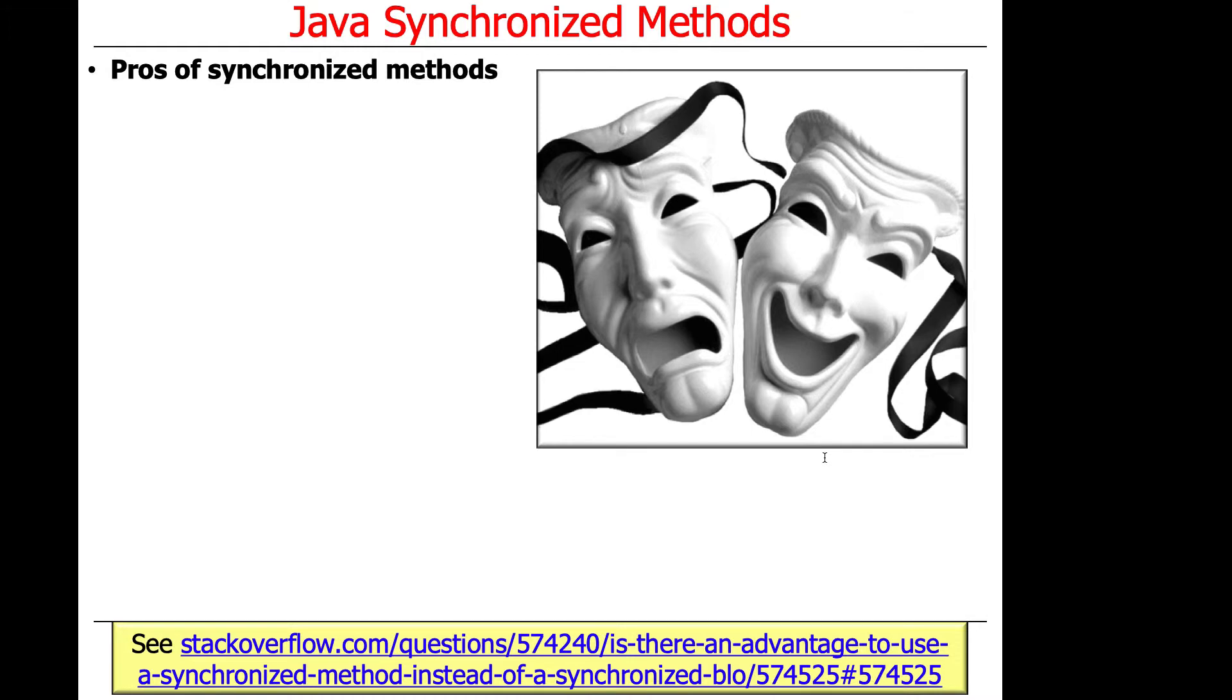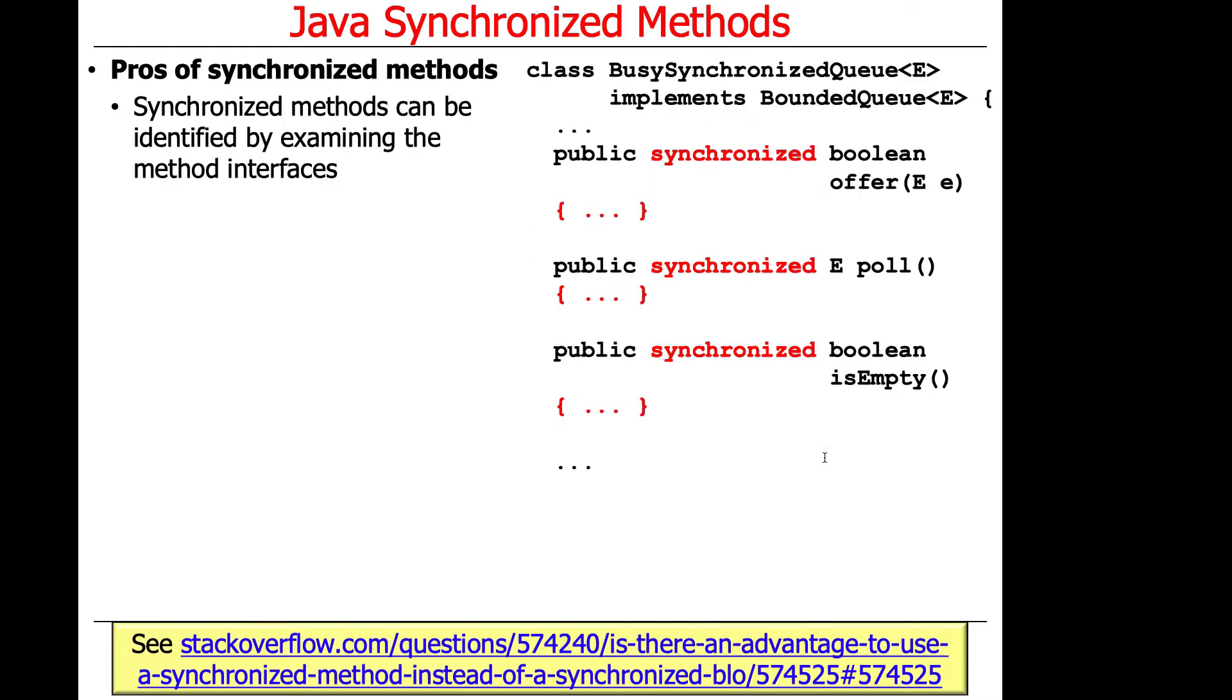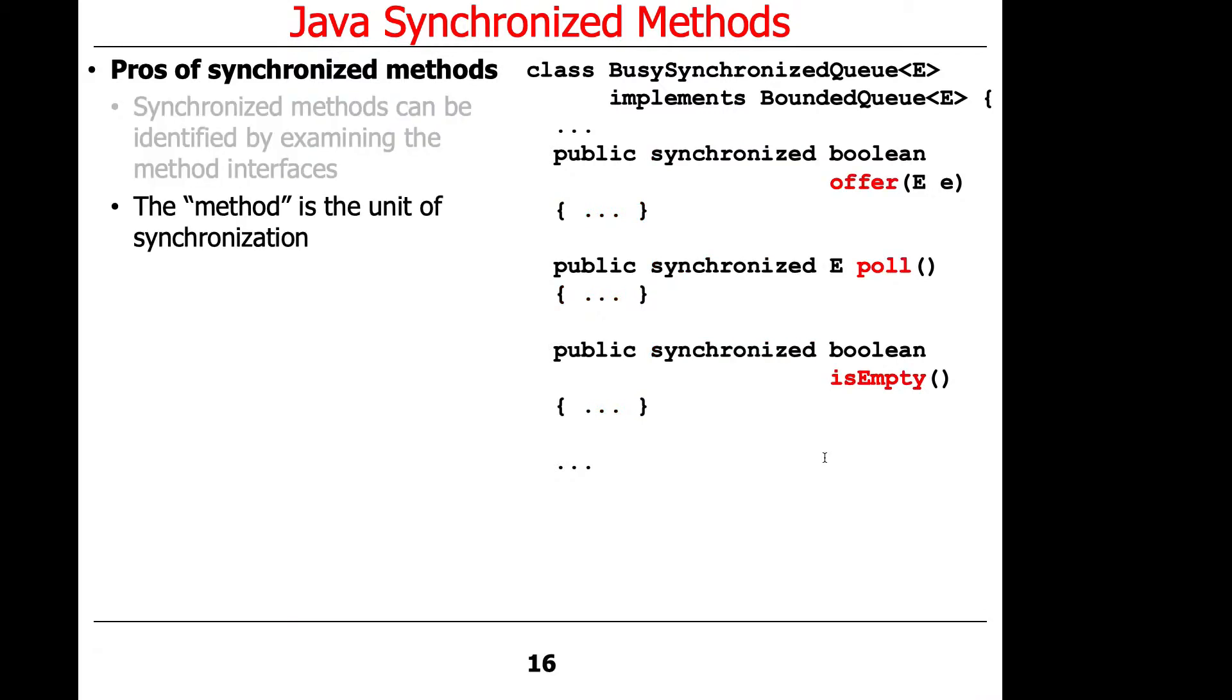So let's quickly talk about some of the benefits of using synchronized methods. So they can trivially be detected by just looking at the documentation for the class. You can see, aha, this is a synchronized method. It's very clear. You just glance at it, it says synchronized. I know only one of those methods can be running at a time in the context of this object.